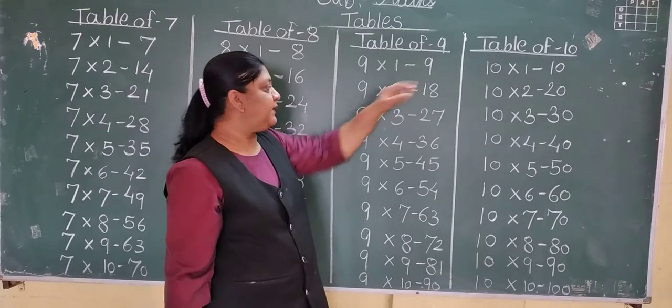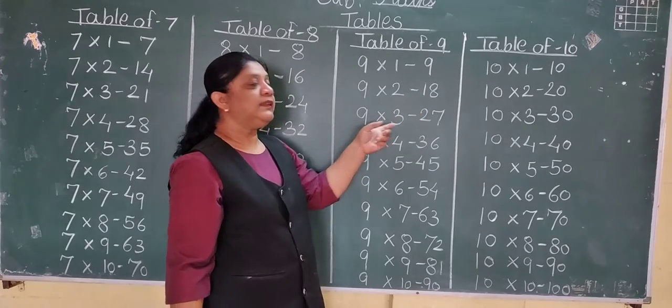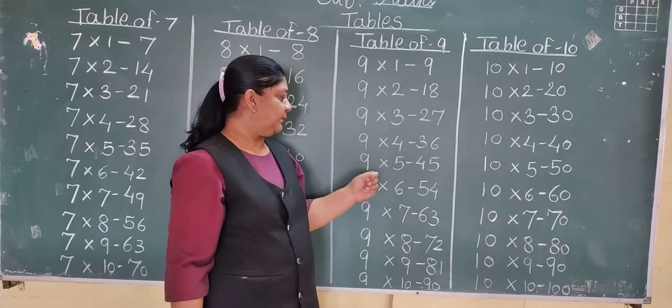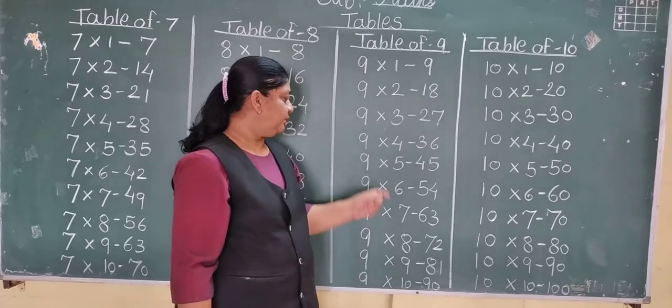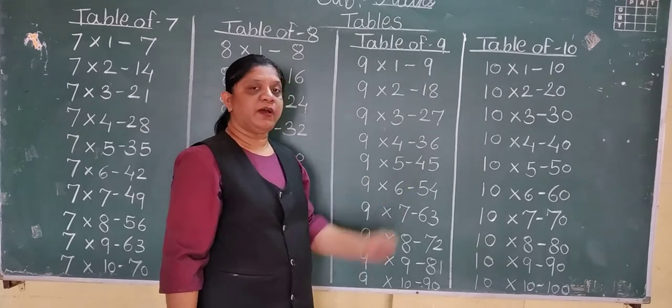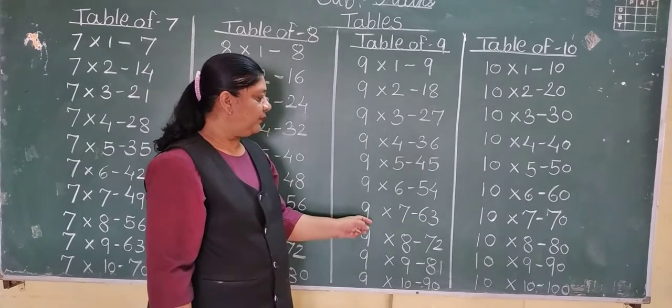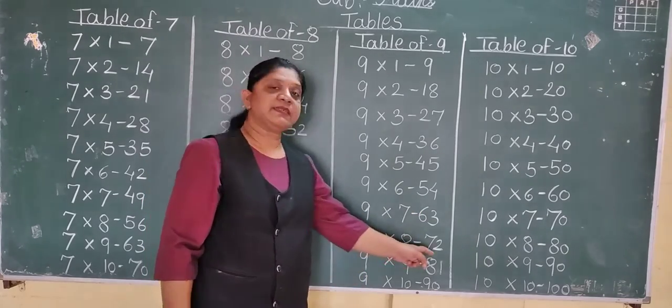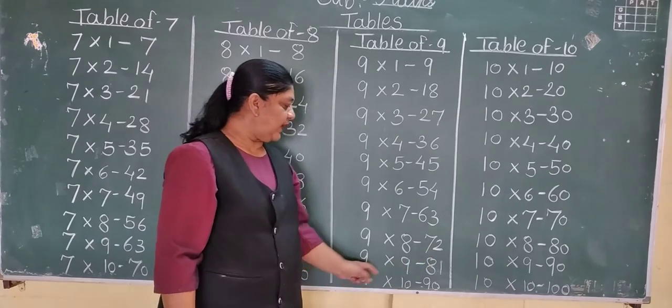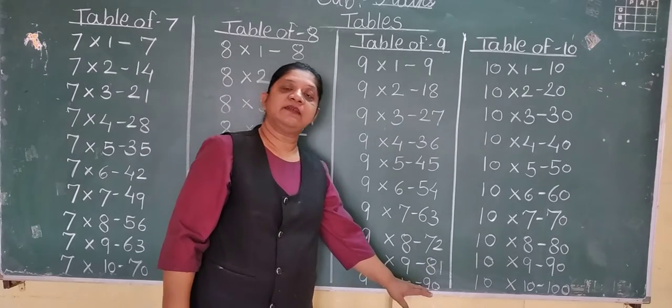9 1s are 9, 9 2s are 18, 9 3s are 27, 9 4s are 36, 9 5s are 45, 9 6s are 54, 9 7s are 63, 9 8s are 72, 9 9s are 81, 9 10s are 90.